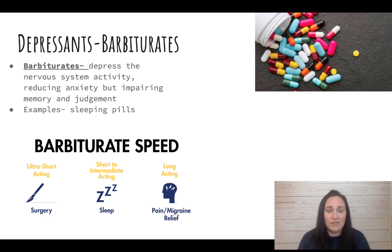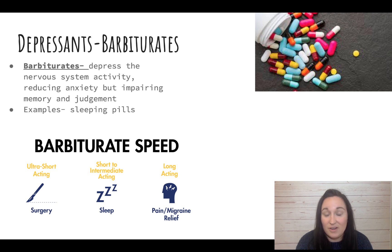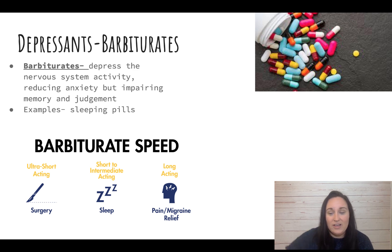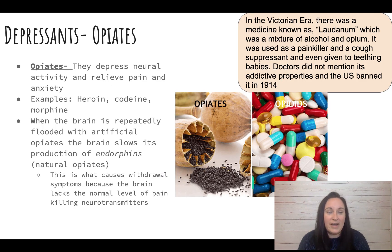Another depressant — not super important — is barbiturates. They also depress the nervous system. Think of a barbiturate like a tranquilizer, such as a sleeping pill or something given before surgery.